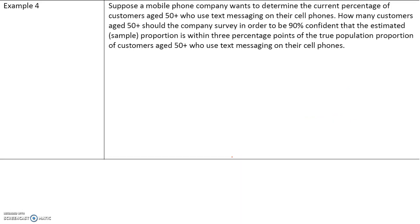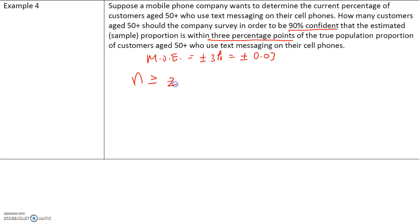Suppose a mobile company wants to determine the current percentage of consumers ages 50 plus who use text messages on their cell phones. How many customers age 50 plus should the company survey in order to be 90% confident that the estimated sample proportion is within three percentage points? When it says within three percentage points, that's your margin of error — so the margin of error is plus or minus 3%, or in decimal form, plus or minus 0.03. The formula is N greater than or equal to z-star times the square root of PQ divided by E, all squared.